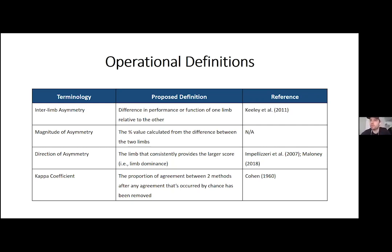The magnitude of asymmetry is simply a percentage value comparing the difference between the two limbs. For example, if I jump 25 centimeters on my right leg and 20 centimeters on my left leg, I have an absolute difference of 5 centimeters, which is a relative percentage difference of 20 percent — and that 20 percent is what we refer to as the magnitude of asymmetry.